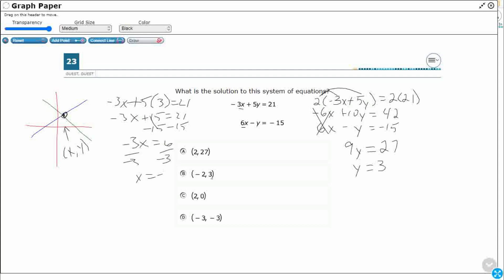X equals -2. So, that works. That's one way to do it. You could have plugged in that 3 down to this one. You also would have gotten the same thing.